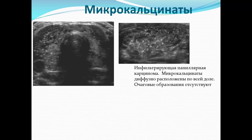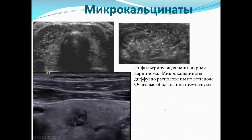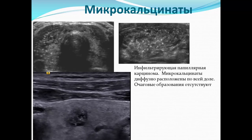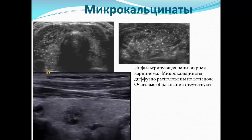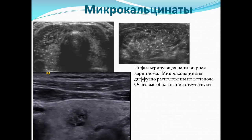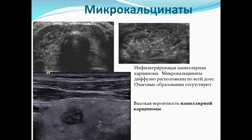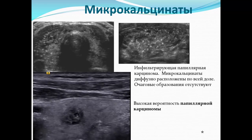Следующий пример — инфильтрирующая папиллярная карцинома: микрокальцинаты расположены диффузно по всей доле, очаговые образования отсутствуют. Видеопример демонстрирует небольшое образование менее сантиметра — очень важно, что мы часто сталкиваемся с такими малыми размерами. Разбросанные в структуре микрокальцинаты заставляют быть очень осторожными в плане вероятности папиллярной карциномы, и в заключении необходимо указать: «Высокая вероятность папиллярной карциномы, рекомендована тонкоигольная аспирационная биопсия».